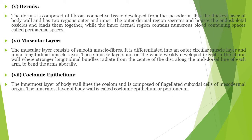The dermis is composed of fibrous connective tissue developed from the mesoderm. This is the thickest layer of the body wall and has two regions, outer and inner. The outer dermal region secretes and houses the endoskeleton ossicles and binds them together. The inner dermis contains numerous blood-containing spaces called perihemal spaces.